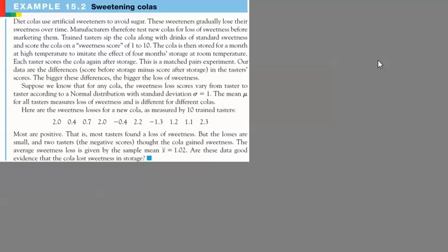So the general question here is: are these data good enough evidence that the cola lost sweetness in storage? So what we're going to do is plot our distribution and then determine where, probability-wise, does the mean of this sample fall along the mean of the population, and use that to determine whether or not the change was likely due to the particular sweetener or if it was just sort of a random act of chance.